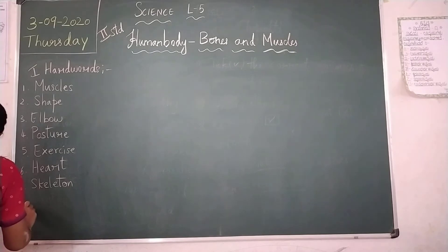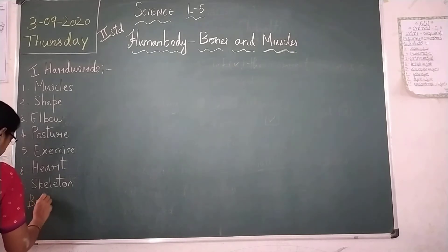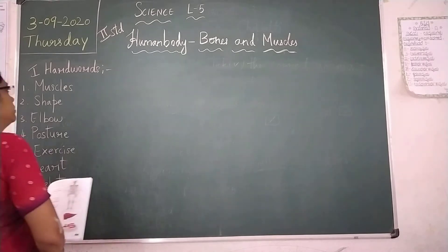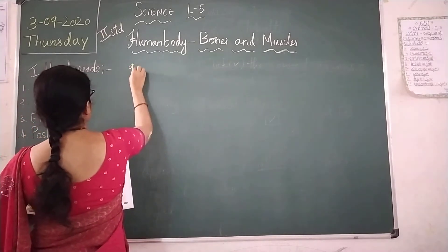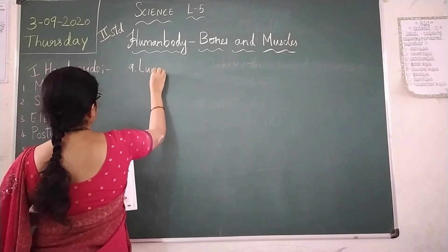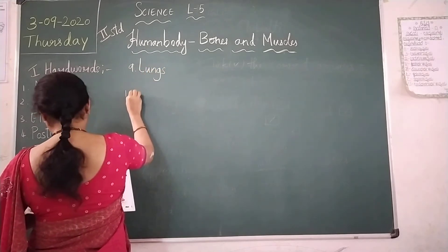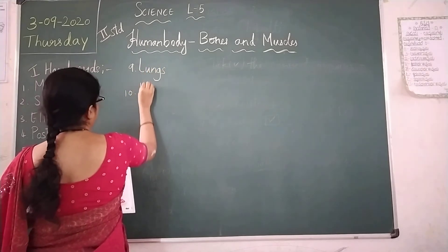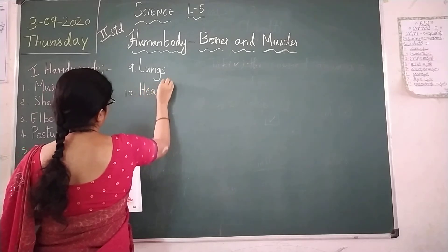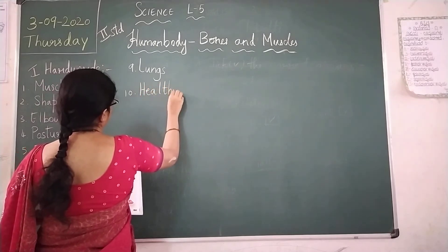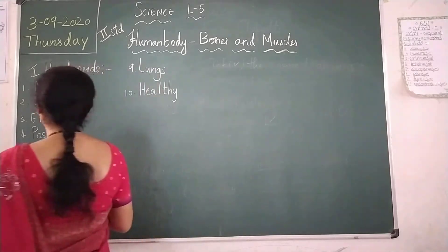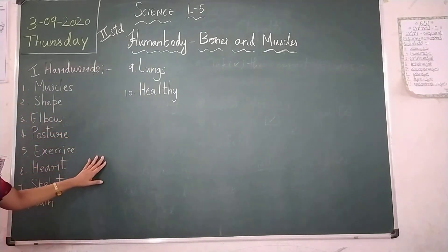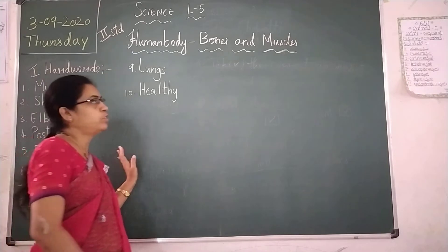Eighth one is brain — B-R-A-I-N — brain. Ninth one is lungs — L-U-N-G-S — lungs. Last one, tenth one is healthy — H-E-A-L-T-H-Y — healthy. So these ten words, copy in the homework and repeat it five times.